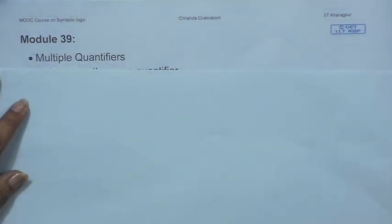Hello, we are in module 39 of the Symbolic Logic course and we are going to start talking about what is known as the multiple quantifier situation. So far, when I have shown you what quantifiers are and how to use them in a sentence, I have shown you with one quantifier, but there can be situations where you need to use more than one quantifier — that is called a multiple quantifiers proposition.